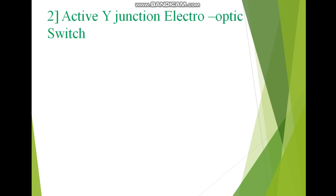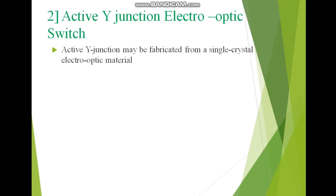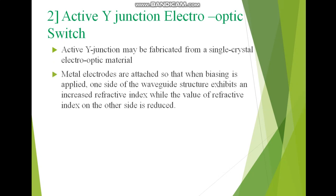Next we will discuss the active Y-junction electro-optic switch. An active Y-junction can be fabricated from a single crystal electro-optic material. Here we use electrodes to which we provide biasing, placed near the optical fiber. When biasing is applied, one side of the waveguide structure exhibits an increased refractive index while the refractive index on the other side is reduced.